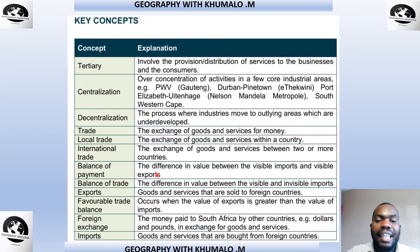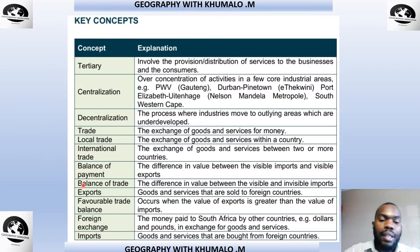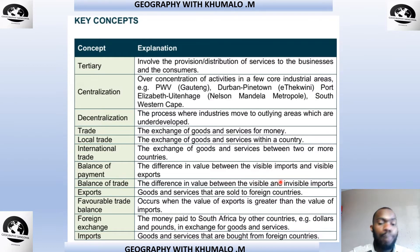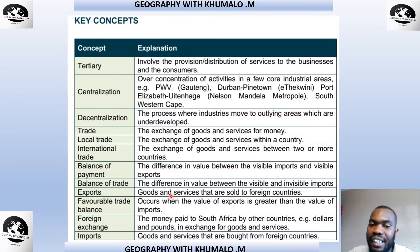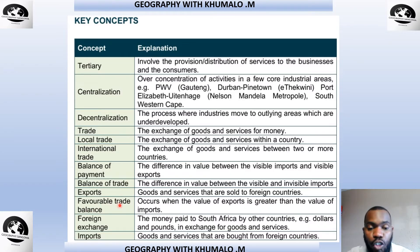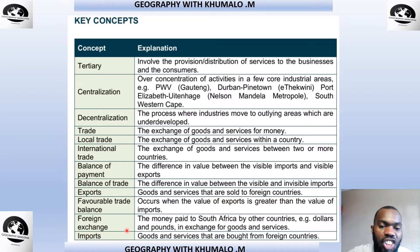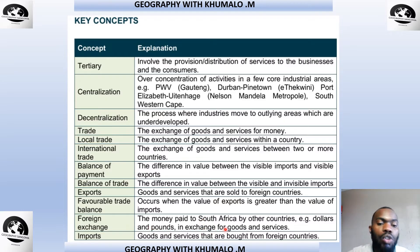Balance of payment is the difference in the value between the visible imports and visible exports. Balance of trade is the difference in value between the visible and invisible imports. The balance of payment and balance of trade are similar. Exports are goods and services sold to foreign countries. A favorable trade balance — a positive trade balance — occurs when the value of exports is greater than the value of imports. Foreign exchange is the money paid to South Africa by other countries, for example in US dollars or pounds. Imports are goods and services bought from foreign countries.